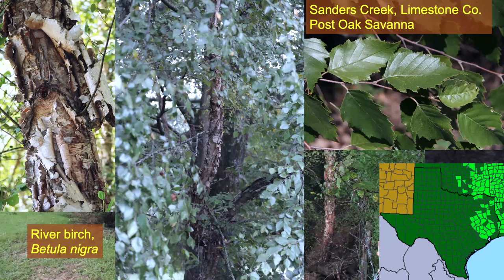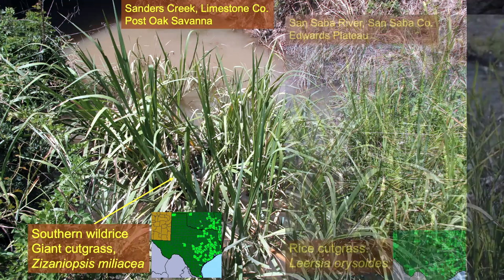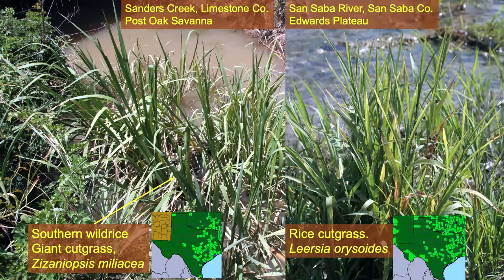Here we are still in the post oak savannah on a little creek in Limestone County, and the southern wild rice — do you think that plant is telling you it likes to be in the water by where it's growing? It's saying 'I can take the water.' Here's a very similar-looking plant called rice cut grass. Both of these will cut your fingers if you slide them down the leaf stem. This one on the right only gets about half the height of the southern wild rice.